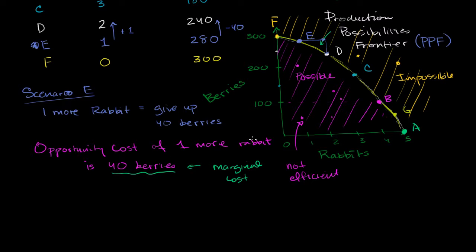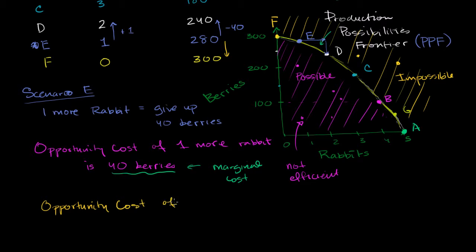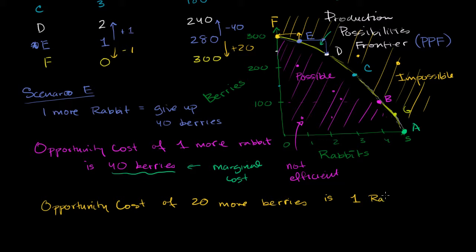But what's the opportunity cost sitting in, let's say, we're tired of eating meat. We're sitting in Scenario E and we want to become vegetarians altogether. So we want to go to Scenario F — essentially not eat any rabbits and eat as much fruit as possible. So another thing you could ask in Scenario E is the opportunity cost of — just to make the numbers easier — 20 more berries. Well, I'm going to give up a rabbit. What we're doing is saying: I want to increase my berries by 20, but to do that I have to decrease my rabbits by one. So the opportunity cost, assuming we are in Scenario E, of 20 more berries is one rabbit.